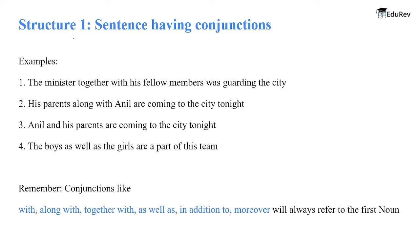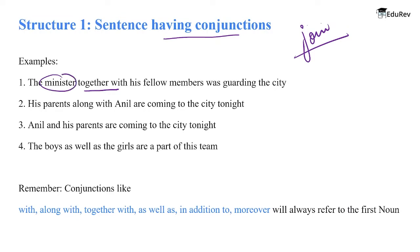Now let us understand different structures for subject-verb agreement. Structure 1 is sentences having conjunctions — conjunctions basically join sentences. Example: 'The minister together with his fellow members was guarding the city.' 'Together with' is the conjunction, and 'minister' is the singular subject, so the verb is also singular. 'His parents along with Anil are coming to the city tonight.' 'Along with' is the conjunction; 'parents' is plural, so the verb is also plural.